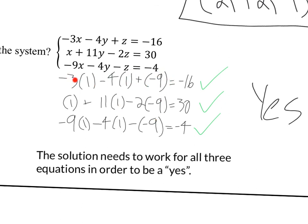And so I typed this into the calculator, press enter, it gave me negative 16. So I checked it off. I typed it into the calculator. It gave me 30. So I checked it off. I typed all this in and gave me negative 4. So I checked it off. As long as all three work, you get, yes, it is a solution.